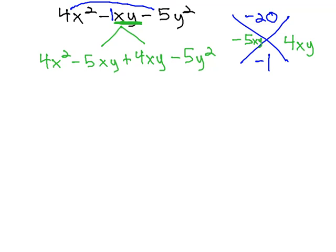We can now continue factoring this problem by grouping, splitting down the middle after the second term. On the left side, we see a GCF of just x. This leaves behind 4x minus 5y.